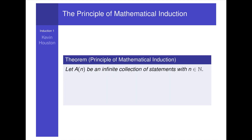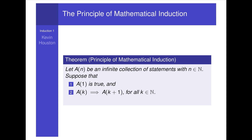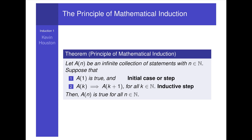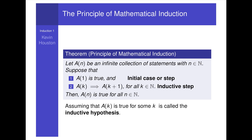Now, the grand theorem — the principle of mathematical induction. Let a_n be an infinite collection of statements with n in the natural numbers. Suppose that: (1) a_1 is true, and (2) a_k implies a_{k+1} for all k in the natural numbers. Then a_n is true for all n in the natural numbers. The first condition is called the initial case or step, and the second is called the inductive step. Condition 1 corresponds to pushing the first domino; condition 2 corresponds to having the dominoes set up so each one knocks down the next. Assuming that a_k is true for some k is called the inductive hypothesis.